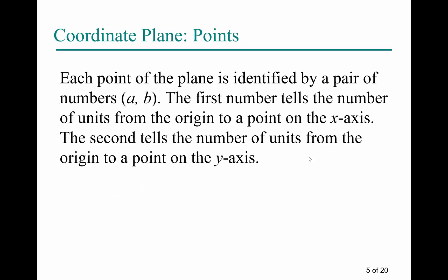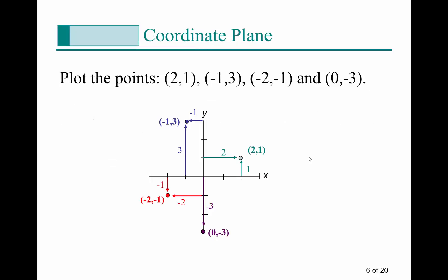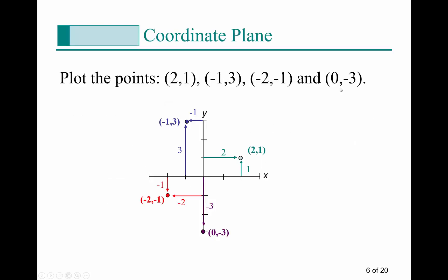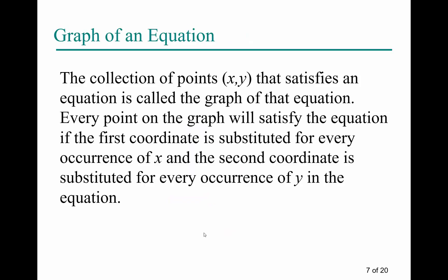Every point on the plane is identified by an ordered pair (x, y). For (2, 1), go across 2 on the x-axis and up 1 on the y. For (-1, 3), go left 1 on the x-axis and up 3. For (-2, -1), go left 2 and down 1. A point on the y-axis is a y-intercept, where x is zero — for example, (0, -3) means starting at the origin and going down 3 on the y-axis.